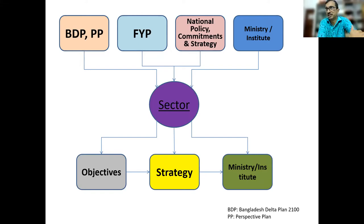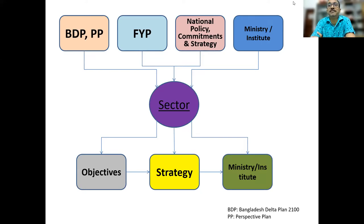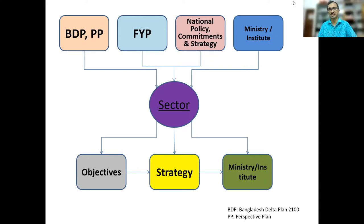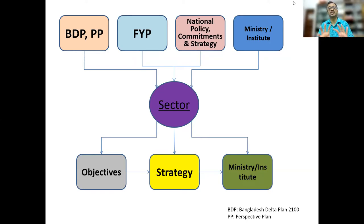If you want to see how sectoral policy works: we have a Bangladesh Delta Plan 2100, then a five-year plan, national policy, commitment, and strategy. Every ministry has a strategy for implementing their vision. For each sector, a certain amount of money is assigned with targets — for example, construct 50 kilometres of metro rail, or 20,000 kilometres of rural road. Every ministry has a target, then makes a sectoral plan with an objective, a strategy, and a line ministry who will implement it.